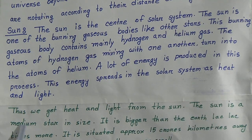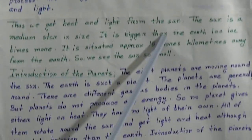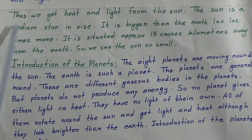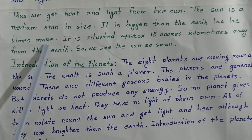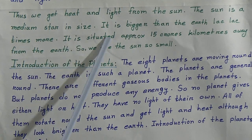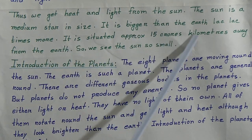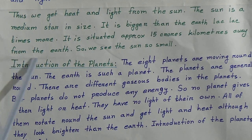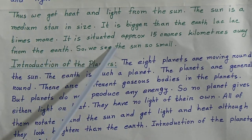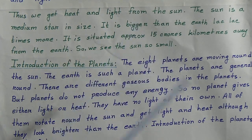The sun is a medium star in size. It is bigger than the earth by many times. It is situated approximately 150 million kilometers away from the earth, so we see the sun so small.